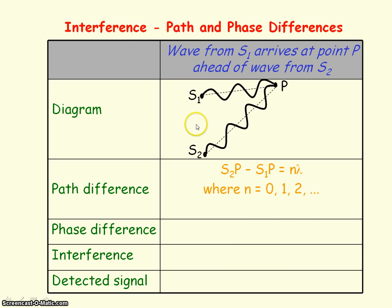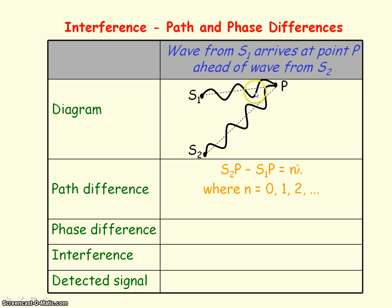If we now consider the case where the waves from S1 arrive before the waves from S2, the distance travelled by waves from S2 to get to point P is greater than for waves from S1. If we consider the path difference between the waves is equal to Nλ, where N is an integer — a whole number of wavelengths.